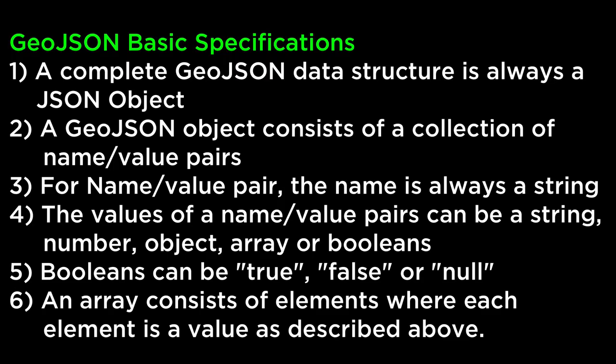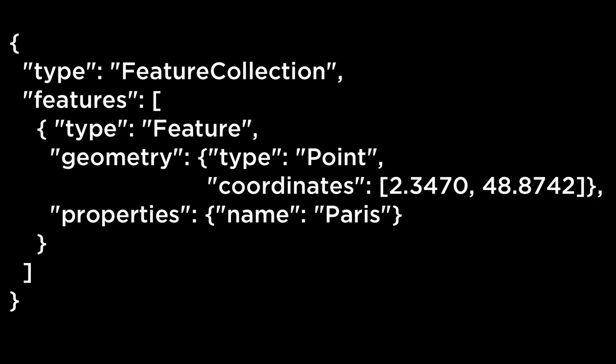The basic GeoJSON rules specify that it must be a JSON object. The specifications also specify rules for the key-value pairs. This is an example of a GeoJSON object — it represents a point on a map. Notice that this is a JSON object that has key-value pairs. One of the values is an array of JSON objects, and within that array is another set of key-value pairs, and within those, some values contain other JSON objects. So you can see that we can encode a great deal of feature objects as well as non-spatial attributes within this data interchange format. Next, let's talk about this GeoJSON object.